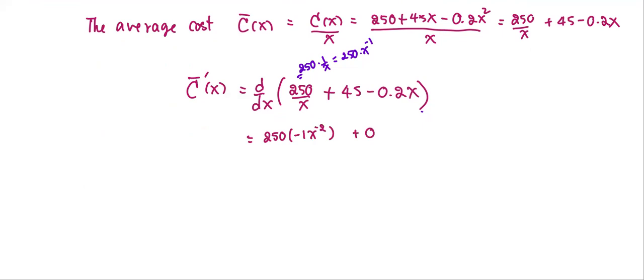The derivative of the average cost function will be -250/x² minus 0.2.